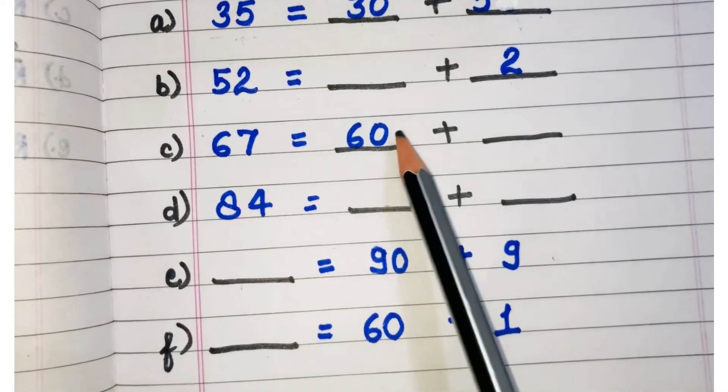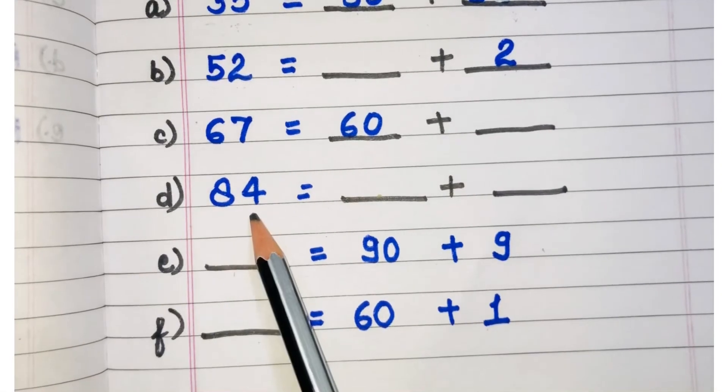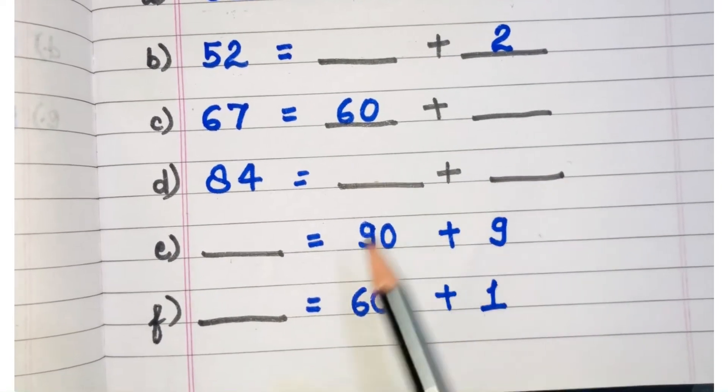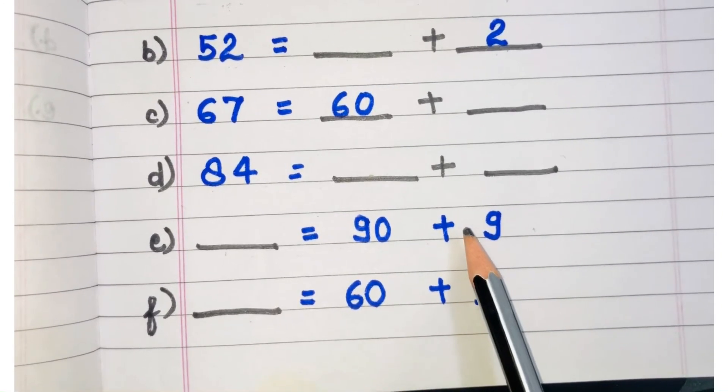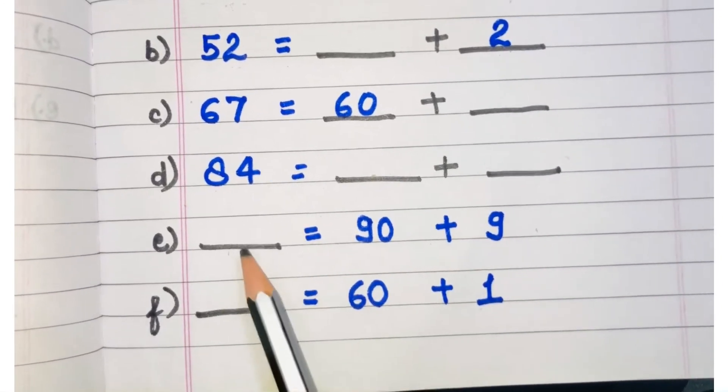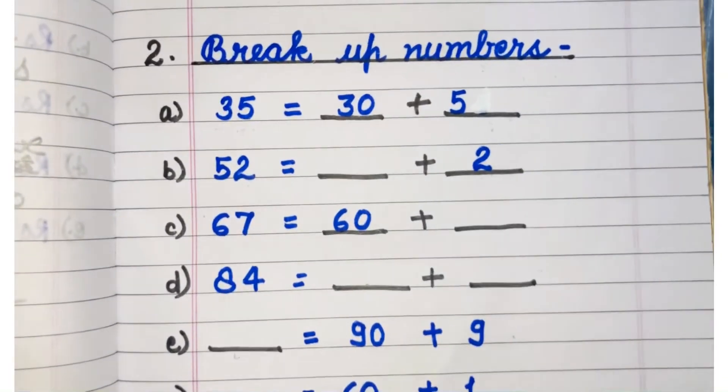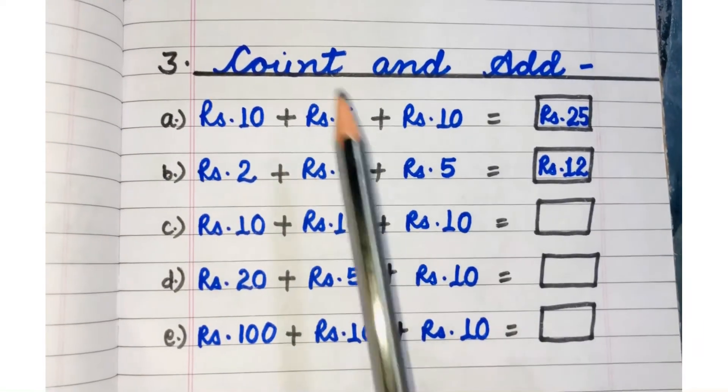Same way, 67 is equal to 60 plus 7 because 7 is at ones place. 84 will be 80 plus 4. Here we have breakup numbers and we have to write the sum. 90 plus 9 is 99 and 60 plus 1 is 61. So the breakup numbers are over.